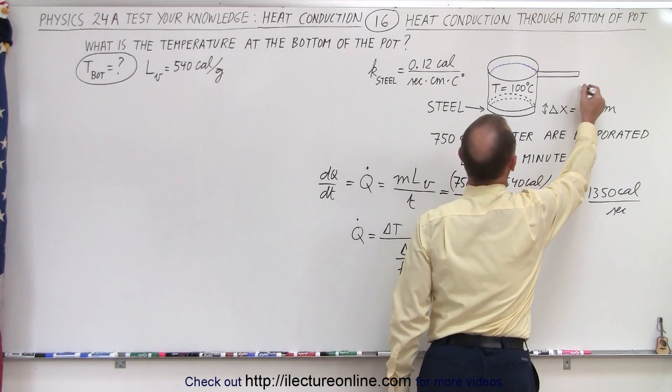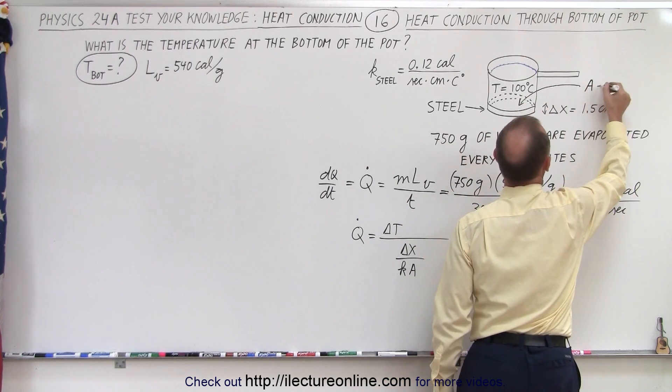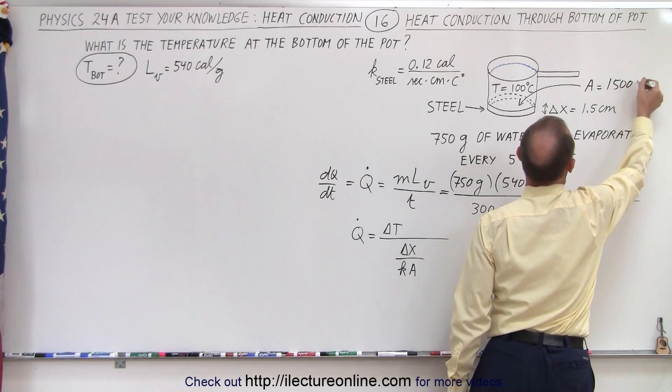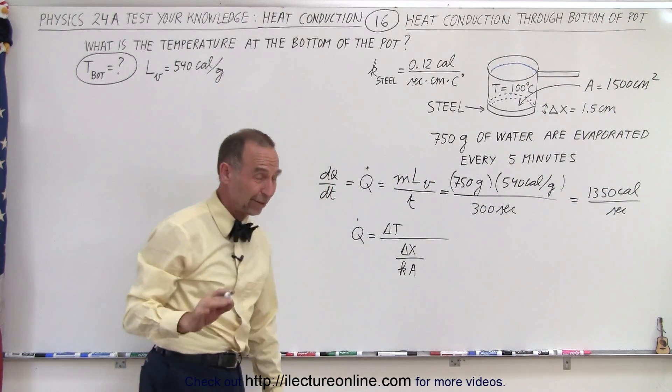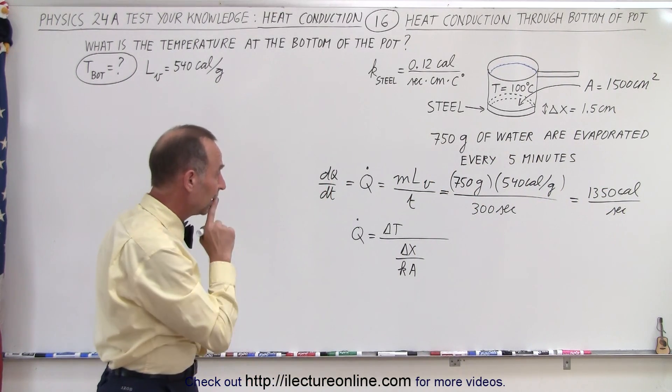We need to know the cross-sectional area at the bottom of the pot. And so let's say the area is equal to 1500 square centimeters. So without that, of course, we couldn't solve the problem.